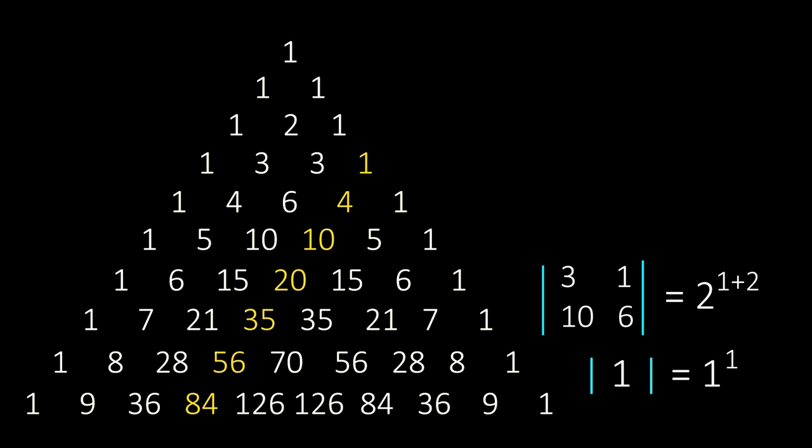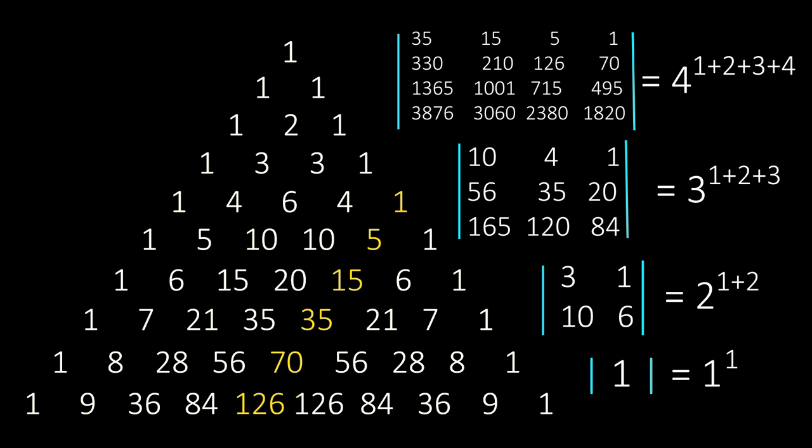If we take the fourth diagonal and find the determinant of the first nine elements, we get 3 raised to power 1 plus 2 plus 3. And if we take the fifth diagonal and find the determinant of the first 16 numbers, we get 4 raised to power 1 plus 2 plus 3 plus 4.